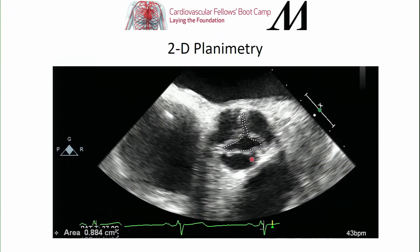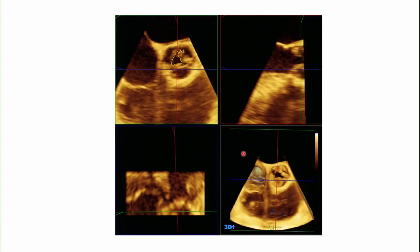Planimetry can be used in 2D — trace out the orifice and the computer calculates the area — or in 3D. 3D is more accurate because we can place our cursor plane exactly where we think the narrowest part of the aortic outflow is.